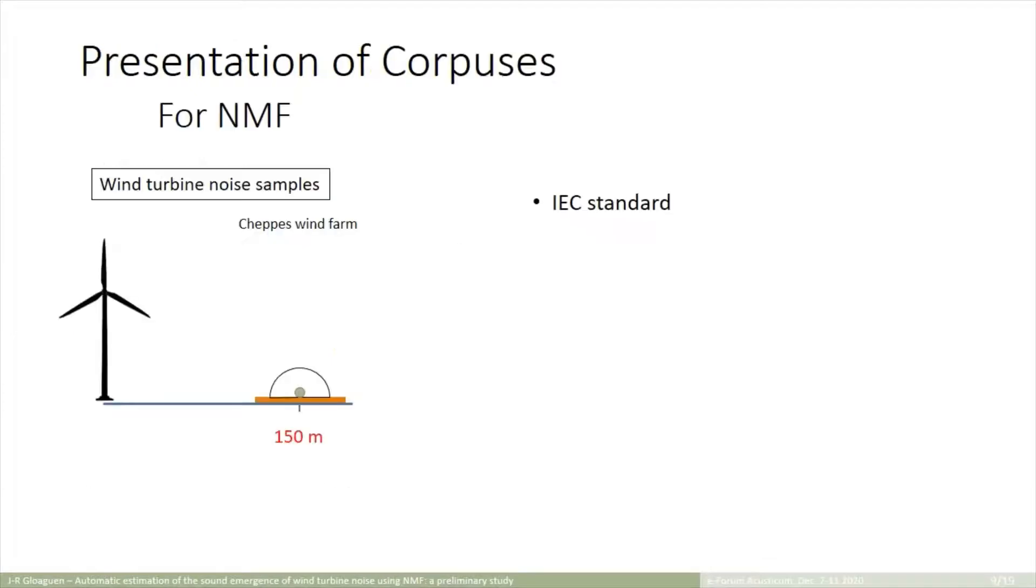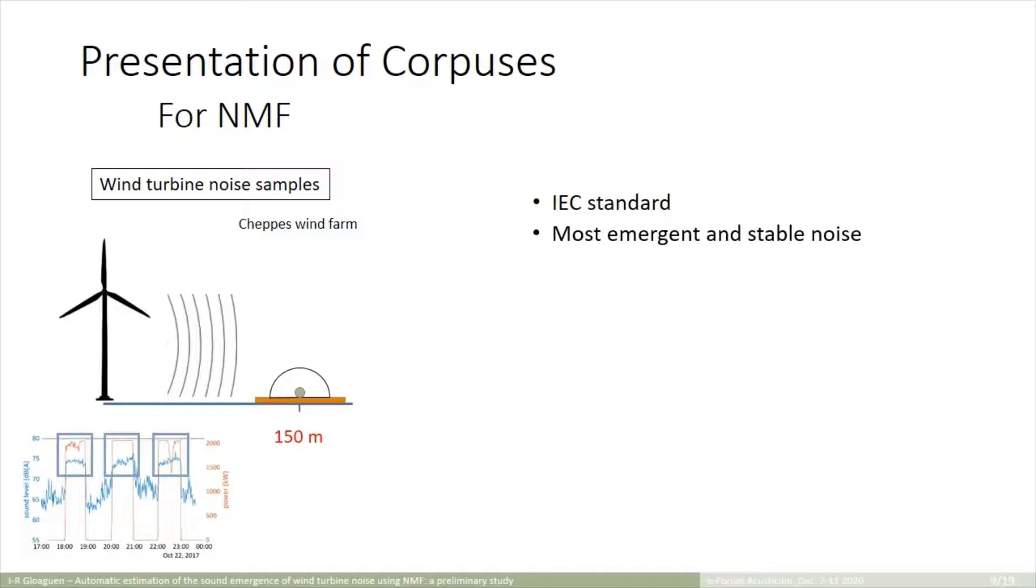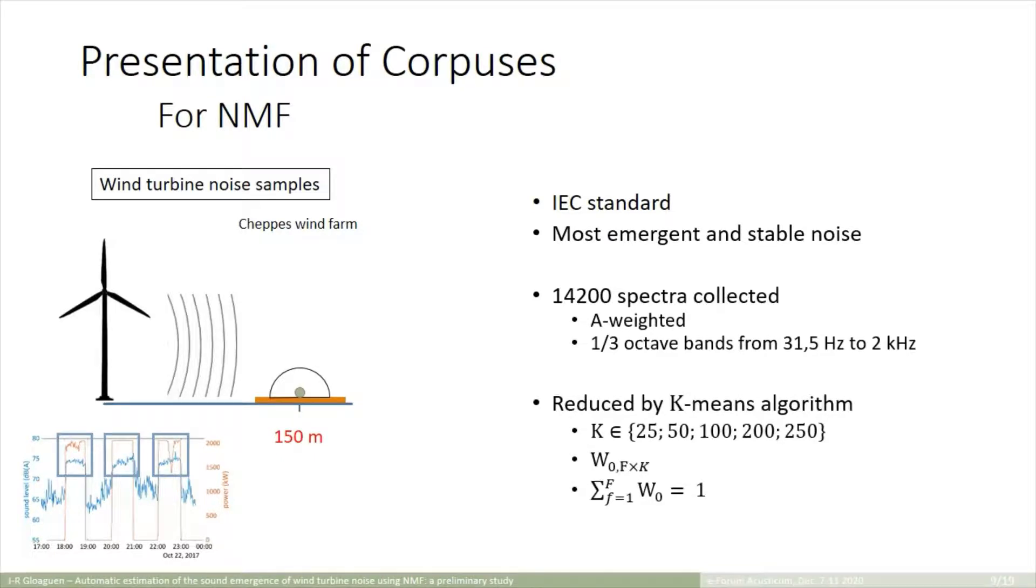For NMF, we collect wind turbine noise measurements at a wind farm in France, in CHEP. These measurements were made according to the EIC measurement protocol during stop and start measurements. The most stable and emerging periods were selected, in order to be sure to best define our sound sources. In the end, we obtain more than 1400 spectra, expressed in 3rd octave bands from 31.5 Hz to 2 kHz. And instead of considering all of these spectra, we reduce their dimension using a Kamins algorithm to a few elements to avoid redundant information, but also to reduce computation time.